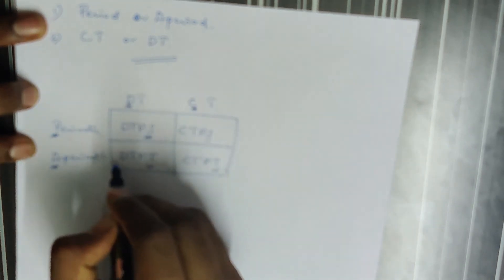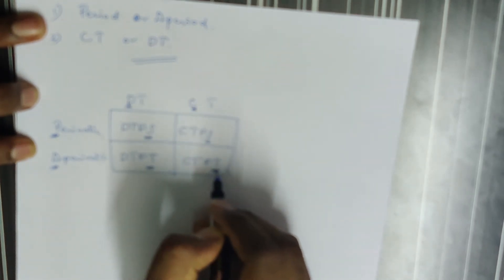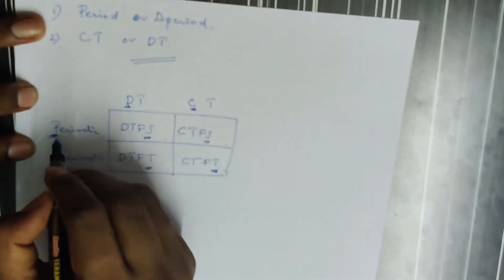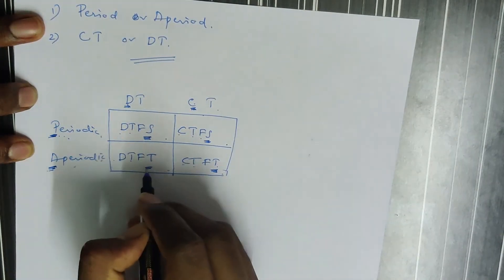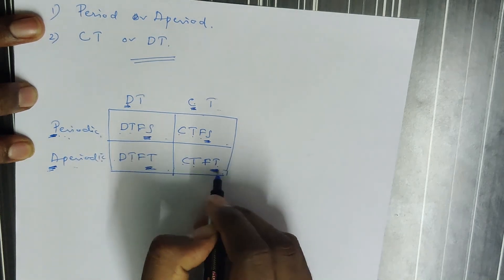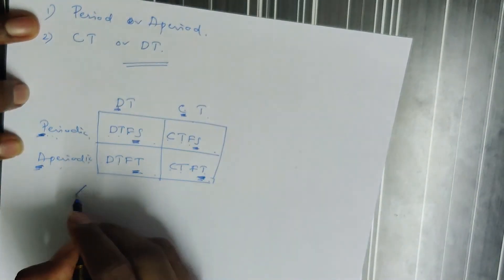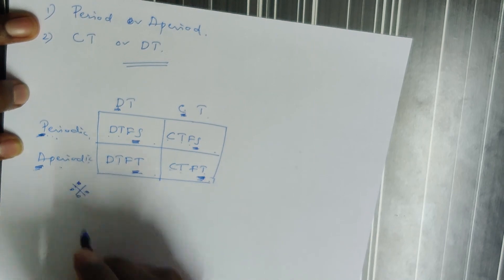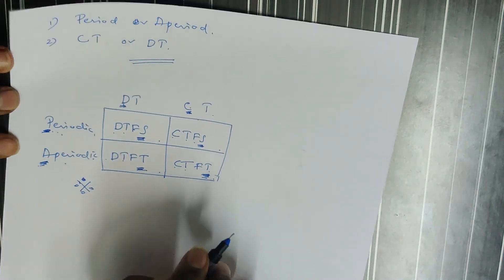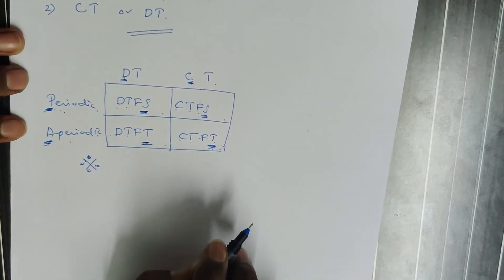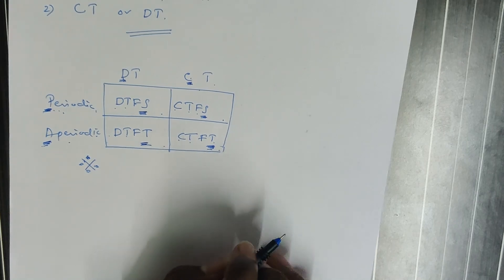So there are mainly four types: Discrete Time Fourier Series, Discrete Time Fourier Transform, Continuous Time Fourier Series, and Continuous Time Fourier Transform. The Continuous Time Fourier Transform is very important. That's it for today. Next topic is the Fourier Series. Thank you.